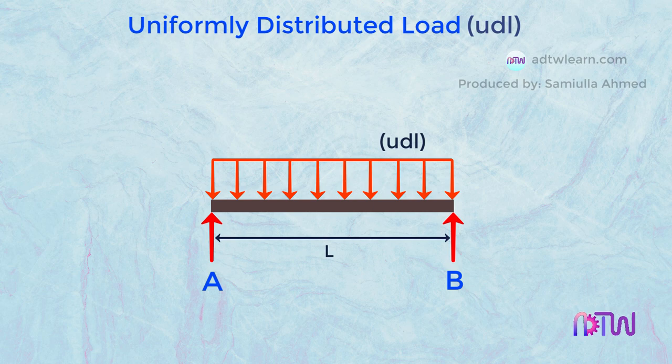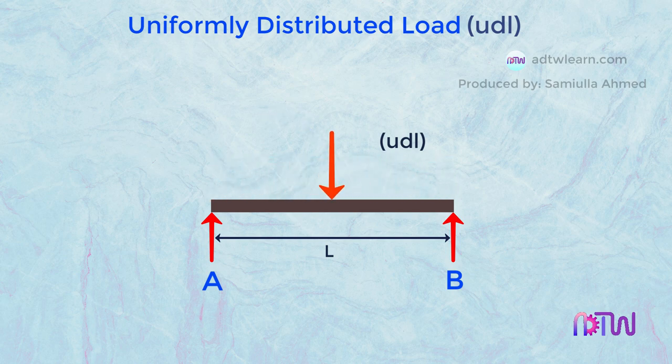Here, the intensity of load is given, such as W per meter. While solving the problem, this UDL is converted into point load and is considered to be acting from the center of UDL.